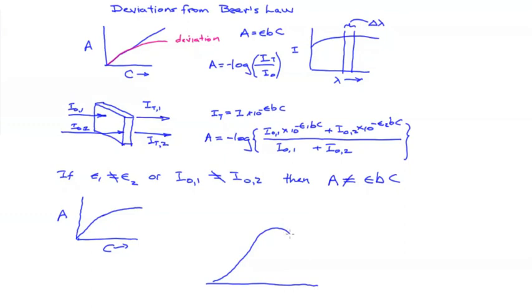When are these conditions going to exist? Imagine that we have an absorption band as a function of wavelength something like this. If the instrument is tuned up on the side of the peak then we get a range of wavelengths that has widely different epsilon values. And that will lead to a non-linear calibration curve.